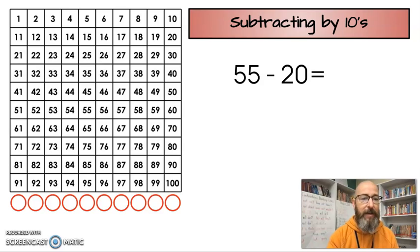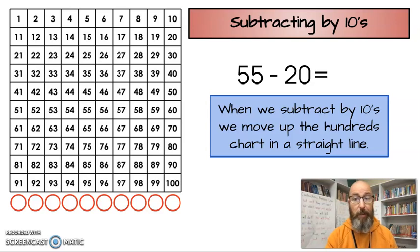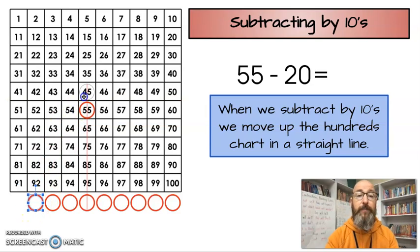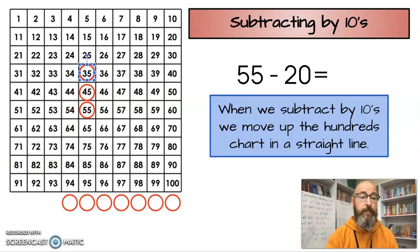Let's try another one. 55 minus 20. Now, again, remember, when we move up by 10s, we move up the 100s chart in a straight line. How many jumps are we going to do this time? Look at the 20, 10, 20, two jumps. So, I'm going to start at 55. Two jumps. One, two. I land on 35, which means 55 minus 20 is 35. Very good.